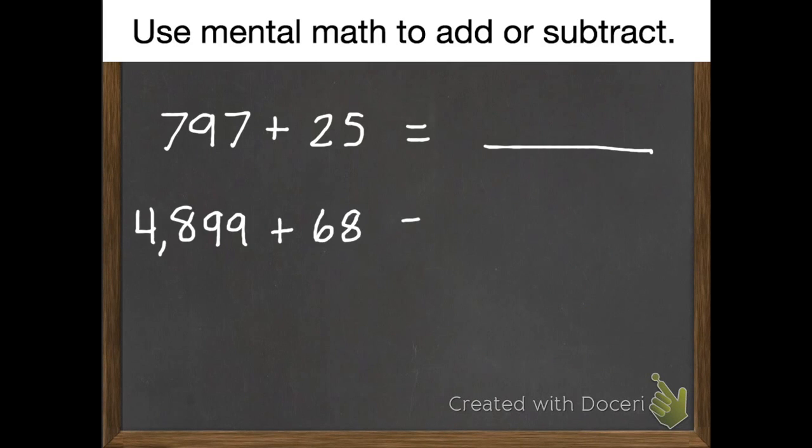Okay, I want you to try these practice problems. Use mental math to add or subtract. 797 plus 25, 4,899 plus 68, and 2,999 subtract 1,545. Pause it, and then unpause to check your work.